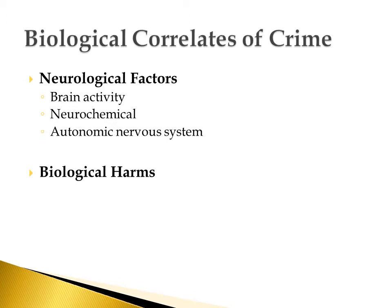First off is a person's brain activity, and whether or not different types or levels of brain activity might be related to crime. Then there are neurochemical factors which might impact crime — in this area, a lot of what we're talking about are different levels of neurotransmitters and whether or not faulty levels and faulty operating of neurotransmitters has to do with crime. And then we'll talk about the autonomic nervous system and what role that plays.